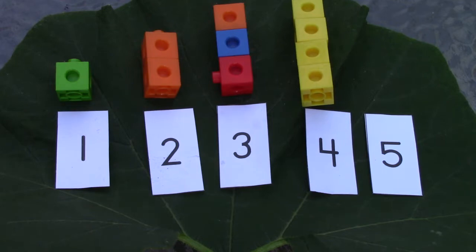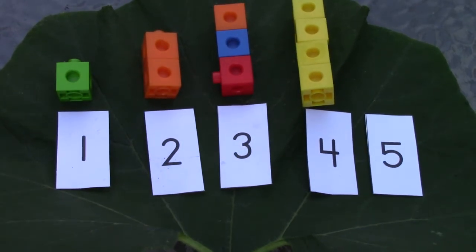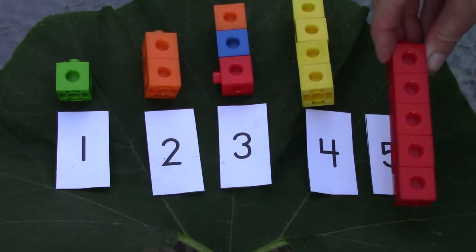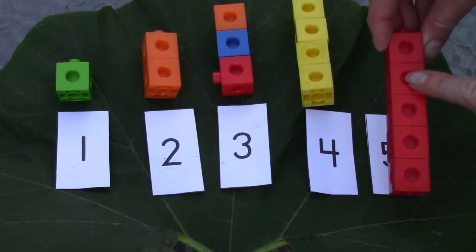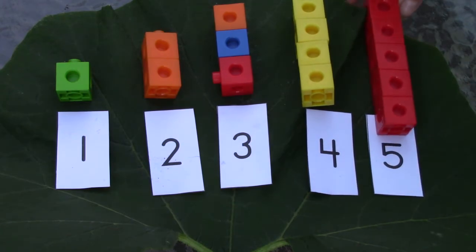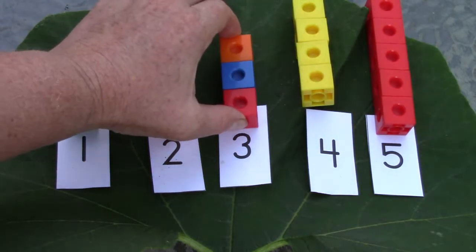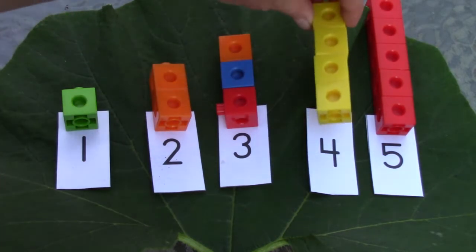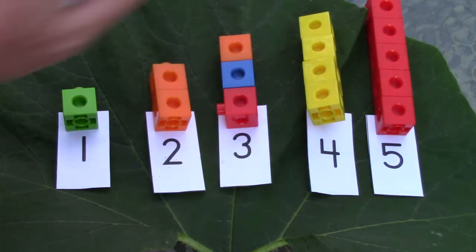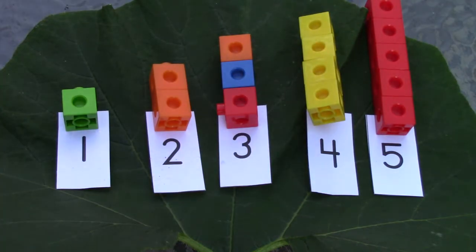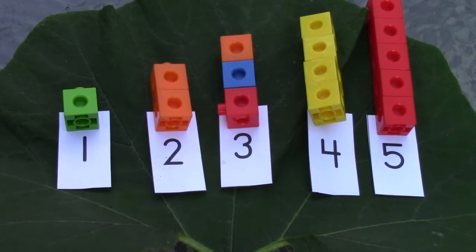And my very last card will get a tower with five. One, two, three, four, five. I have one, two, three, four, and five snap cubes. Do you think that you can make towers with your snap cubes?